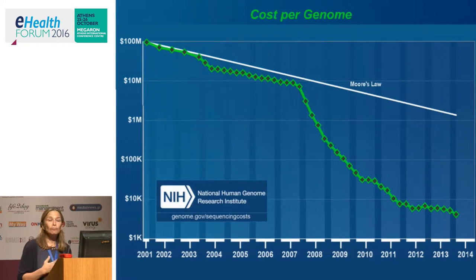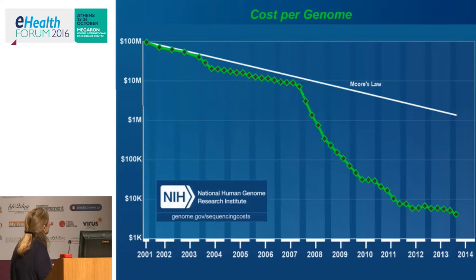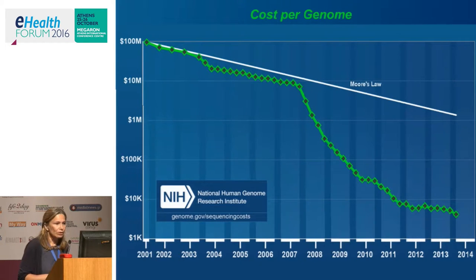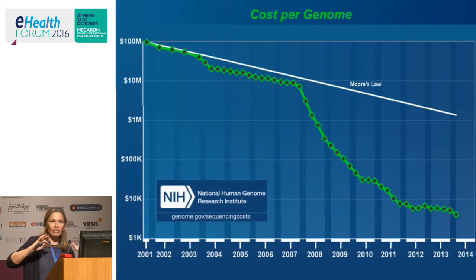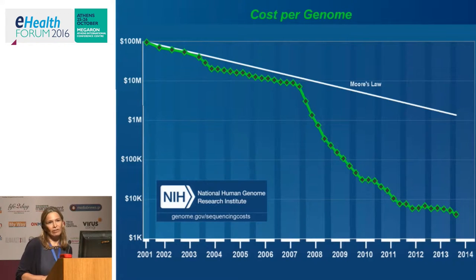If we look at the cost per genome, we see this dramatic change — from $100 million down to getting close to $1,000 per genome. What is Moore's law? Moore's law says that every 18 months the transistors and chips get faster. But sequencing costs are dropping much faster than Moore's law.